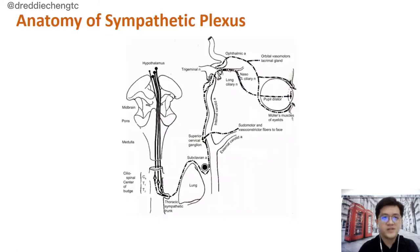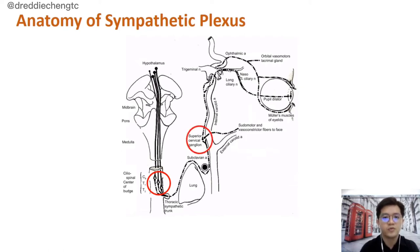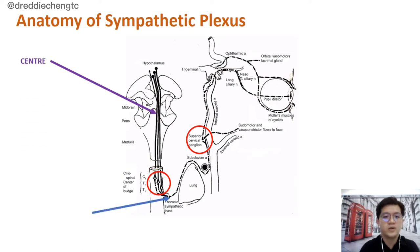To understand Horner's Syndrome, we need to understand the anatomy of the sympathetic plexus. There are two important structures: the ciliospinal center of Budge located at the C8 to T1 region, and the superior cervical ganglion. These two structures divide the sympathetic plexus into three parts: the first-order neuron, also called the central neuron, and the second-order neuron, also called the preganglionic neuron, and the third-order, also called the postganglionic neuron.